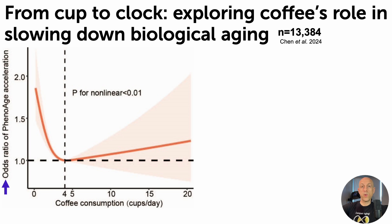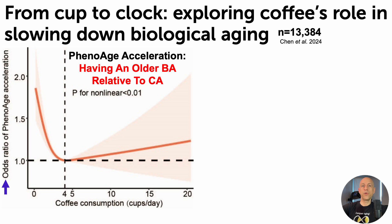Phenowage is exactly the test that I've posted many times on this channel — this is Dr. Morgan Levine's phenowage calculator using those nine blood test biomarkers. So what is phenowage acceleration? That means having an older biological age relative to your chronological age. So on the y-axis, we've got the odds ratio of having an older biological age relative to chronological age.